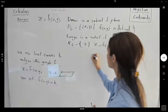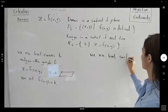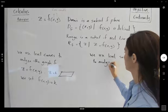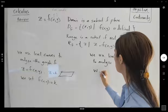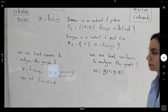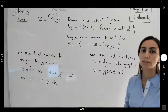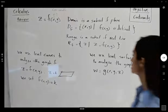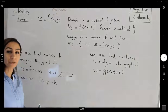We use level surfaces to analyze the graph of w equals g of x, y, and z. In this case, we try to slice the graph by setting w equal to some fixed numbers. It gives us a general idea of this four-dimensional object in 3D.